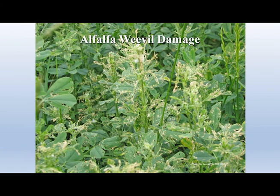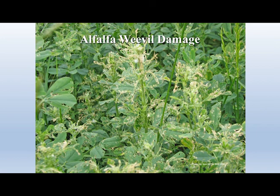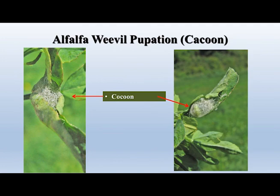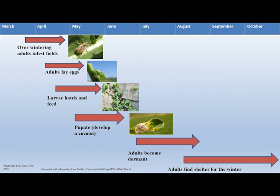When populations are high, larvae can cause quite significant damage to your alfalfa. Once alfalfa weevils have reached their final instar they stop feeding and develop a cocoon, creating webbing and pulling the leaflet of the alfalfa around themselves for protection. Reviewing the life cycle: adults return to the field in late March through April, start laying eggs from mid-April through May, larvae hatch until late May, then pupate. In summer adults become dormant, and in late summer through fall they seek winter shelter.